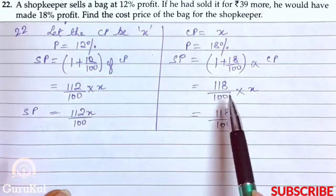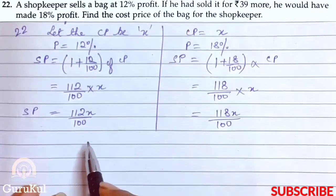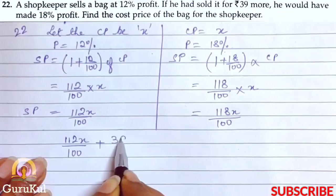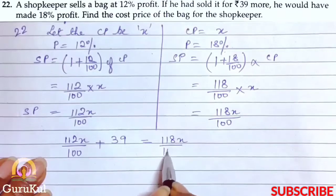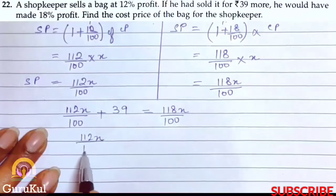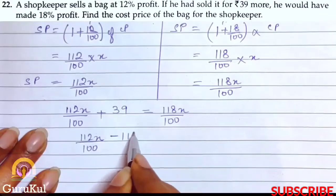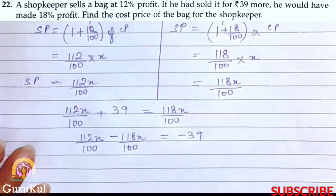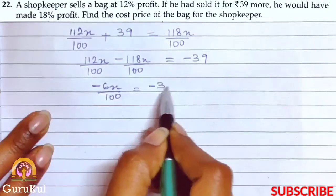In both cases we have found the selling price of the bag. Now, if he had sold it for Rs. 39 more at 18%, then the equation is 112x by 100 plus 39 equals 118x by 100. This becomes minus 6x by 100 equals minus 39.